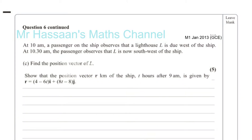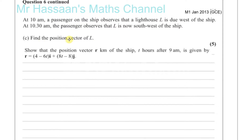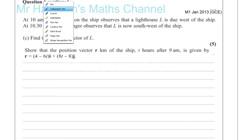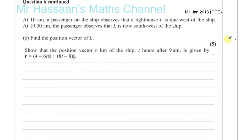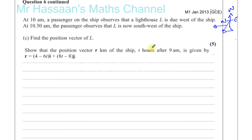Question number six continued, this is Part C from M1 January 2013. Parts A and B were done in the previous video. Here we're told that at 10 a.m. a passenger on the ship observes a lighthouse L is due west of the ship — exactly west. At 10:30 a.m. the passenger observed that the lighthouse is now southwest of the ship — exactly halfway between south and west. Now find the position vector of L.